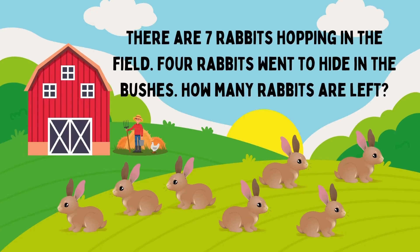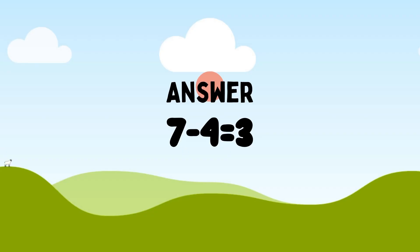There are 7 rabbits hopping in the field. 4 rabbits went to hide in the bushes. How many rabbits are left? So, total 7 rabbits minus 4 rabbits went to bushes. 7 minus 4 is equal to 3. So, 3 rabbits left in the field.